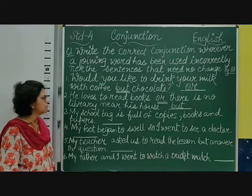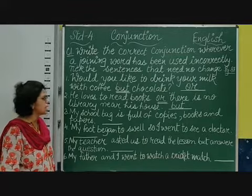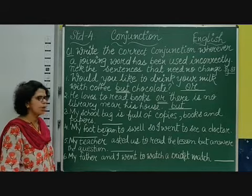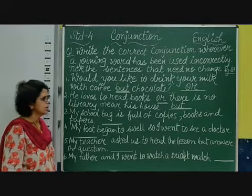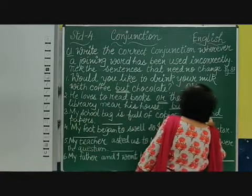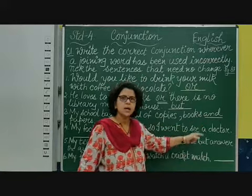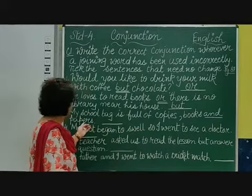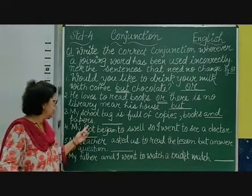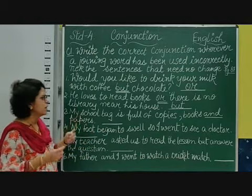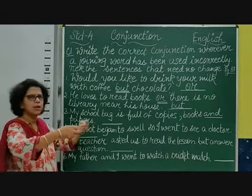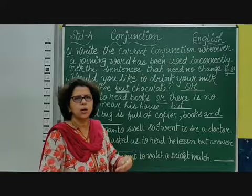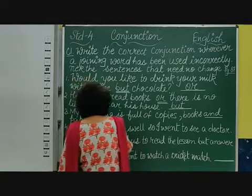Third sentence: 'My school bag is full of copies, books and papers.' The conjunction here is 'and'. This is correct — copies, books, and papers are similar things being joined together. 'And' is used when we have a number of similar things to join. So this sentence is correct and we mark it with a tick.